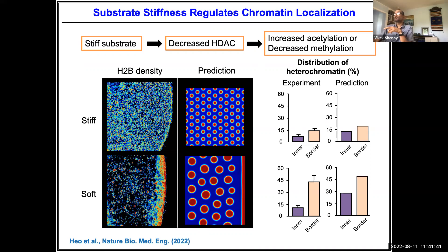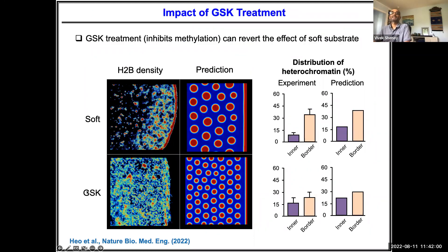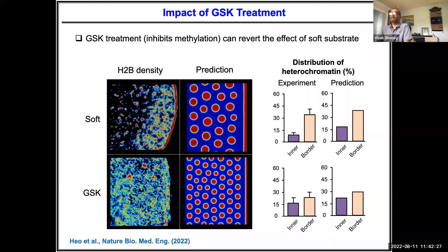To test this we can use epigenetic regulators like TSA or GSK, which open up heterochromatin and make it more transcriptionally active. Without changing the stiffness, if you treat soft-substrate cells with GSK, the domain sizes become smaller and the lamina-associated domains disappear. We can recapitulate these changes simply by altering the level of methylation using GSK or TSA. Using machine learning on this rich dataset, we can extract mechanochemical parameters including affinity to the lamina and the energy landscape.